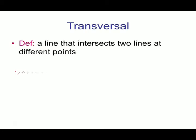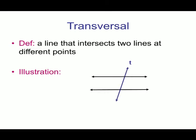Now, what is a transversal? Definition: a line that intersects two lines at different points. Two lines are given and a third line which intersects those two lines at two different points is called a transversal. Here you can see line T is the transversal intersecting two lines — the yellow lines are the two lines and the blue line is the transversal.